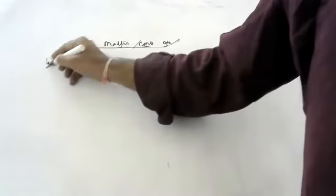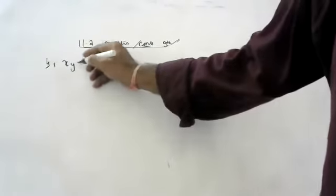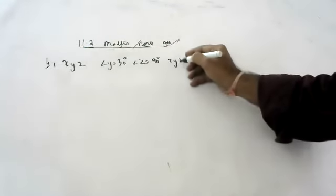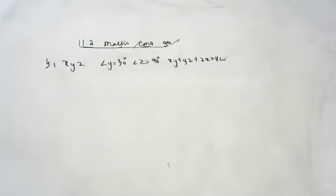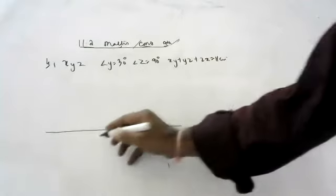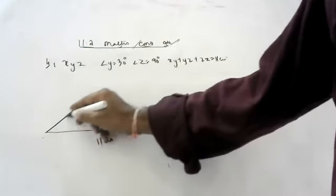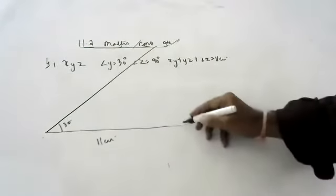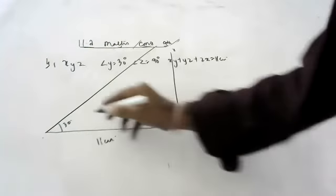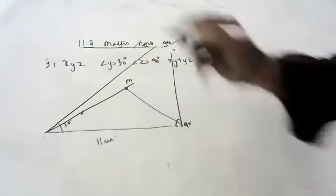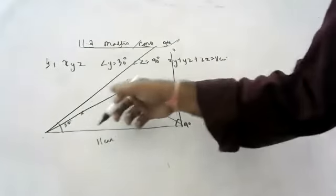Fourth question: Construct triangle XYZ in which angle Y is equal to 30 degrees, angle Z is equal to 90 degrees, and XY plus YZ plus ZX is equal to 11 centimetres. Angle Y is 30 degrees — draw 30 degrees. Angle Z is 90 degrees — draw 90 degrees. Bisect from here, bisect from here — after bisecting, draw a perpendicular bisector and join the lines.